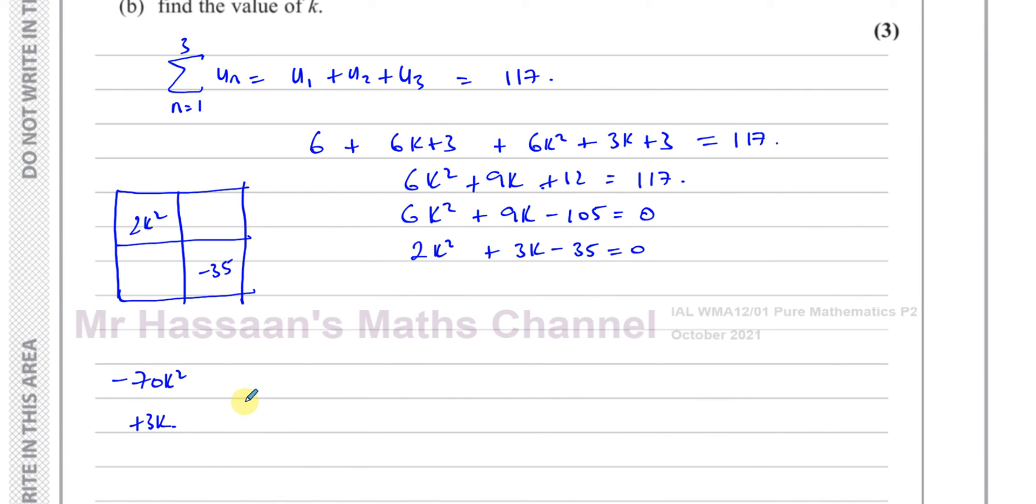You've got 10 times 7. So if I write plus 10K and minus 7K, that's going to give me negative 70K squared. And when I add them, I get plus 3K. That's the right combination.